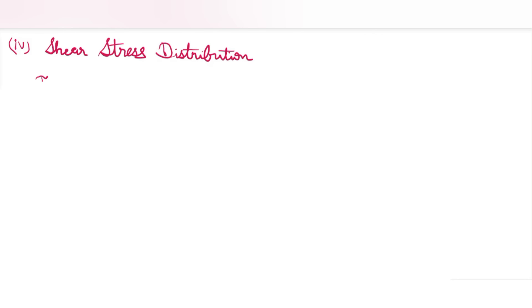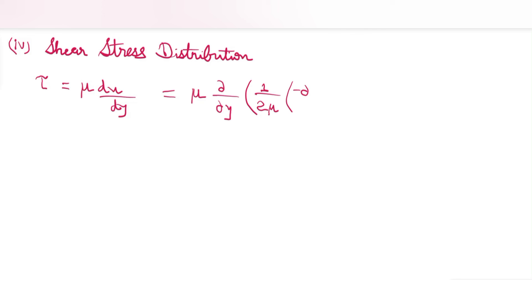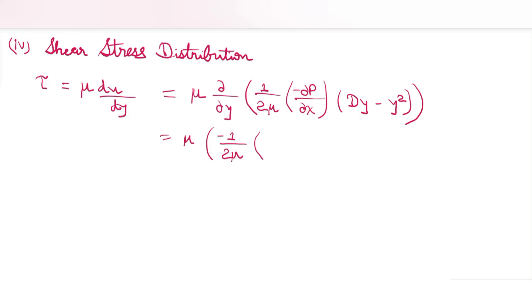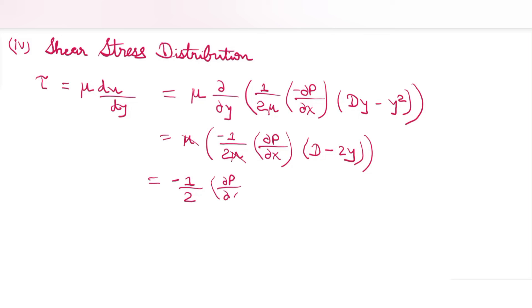The last topic is shear stress distribution. Using Newton's law of viscosity τ = μ(du/dy) and differentiating the velocity equation with respect to y: τ = μ · d/dy[(1/2μ)(−∂P/∂x)(Dy − y²)]. The constant (1/2μ)(−∂P/∂x) comes out, and differentiating (Dy − y²) gives D − 2y. Since μ cancels: τ = −(1/2)(∂P/∂x)(D − 2y).